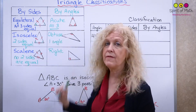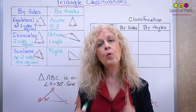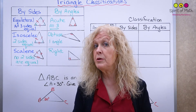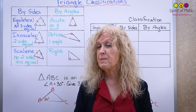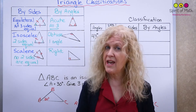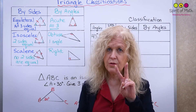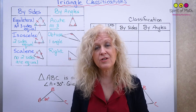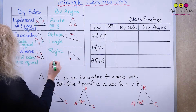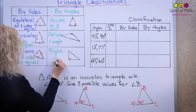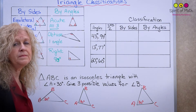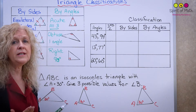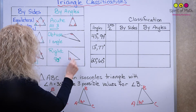For an obtuse triangle, only one angle is obtuse. Can you have a triangle with two obtuse angles? Try it and you'll find you can't — you can never make a triangle with two or more obtuse angles. For a right triangle, one angle is exactly 90 degrees. Can you make two angles 90 degrees in a triangle? Try it and you'll find you can't. There's a little box symbol to indicate the right angle.